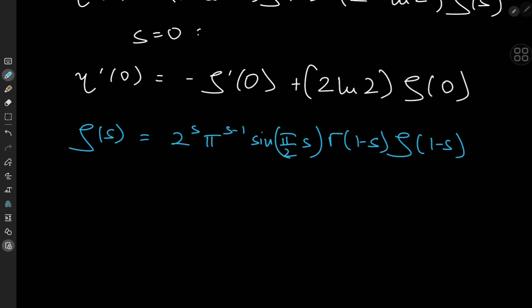That is one remarkable equation. To calculate ζ(0), plugging in s = 0 or s = 1 both involve ζ(1), which is a singularity — a no-go. Also, for the s = 1 case, the gamma function has a singularity at argument 0. A nice workaround is to multiply the whole equation by (1 − s).